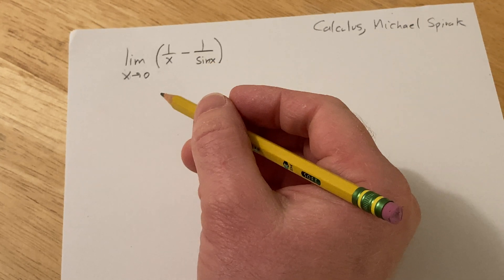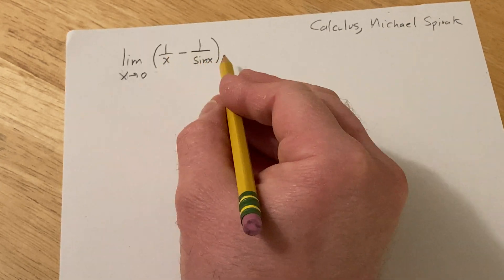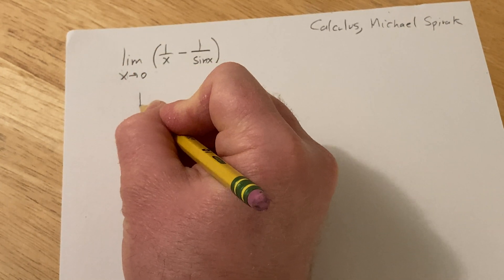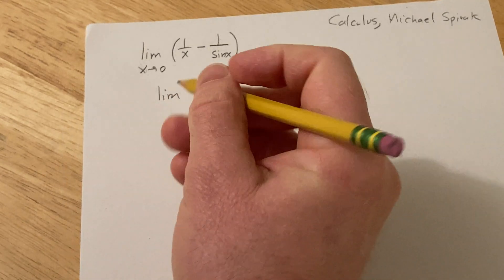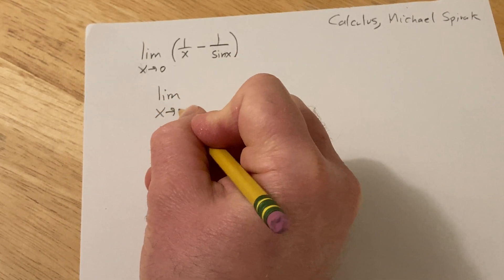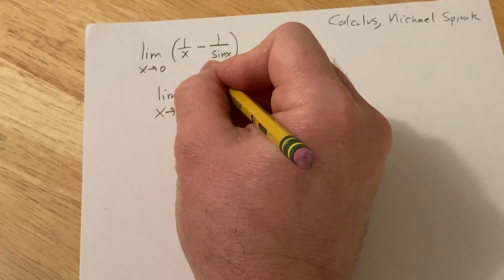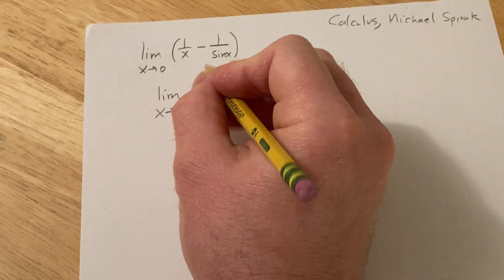So my first thought is to perform the subtraction here. So this is the limit as x approaches 0, and I have not done this problem. And the LCD here is going to be x times sin x.